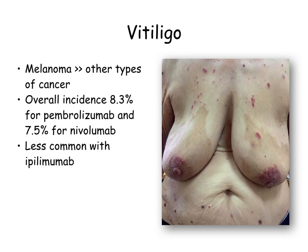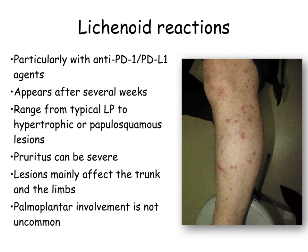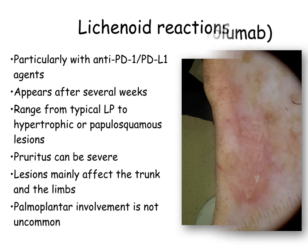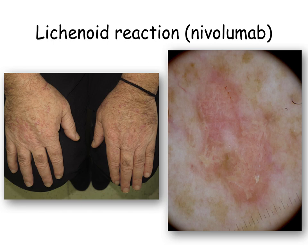Vitiligo is mainly seen in melanoma patients under treatment with pembrolizumab and nivolumab. Here we see a 75-year-old individual under treatment with nivolumab for metastatic melanoma who developed both vitiligo and bullous pemphigoid. Lichenoid reactions particularly happen with anti-PD-1 and anti-PD-L1 agents. Dermoscopy may prove extremely useful in the accurate diagnosis of lichenoid reactions, since it highlights the pathognomonic intersecting white lines — the so-called Wickham striae — on the surface of the lesions.